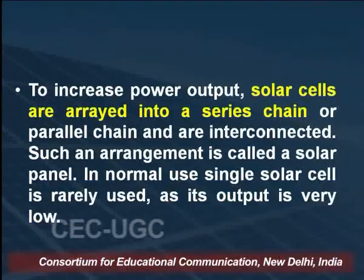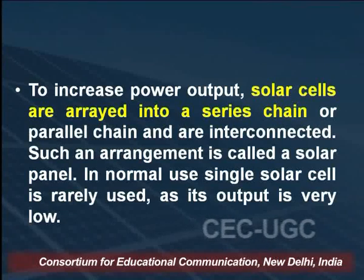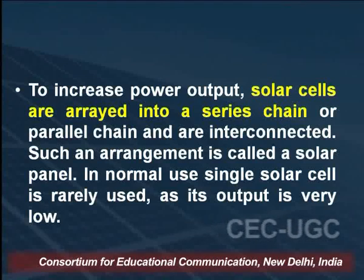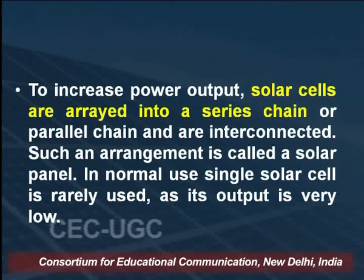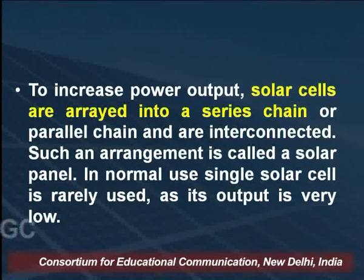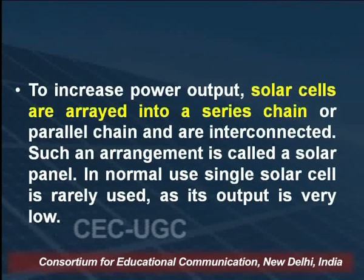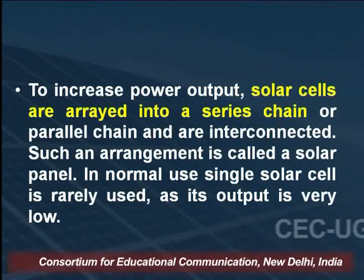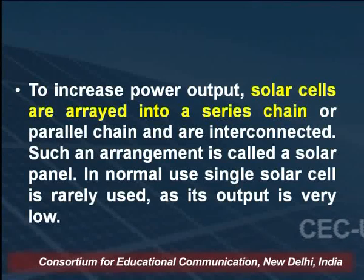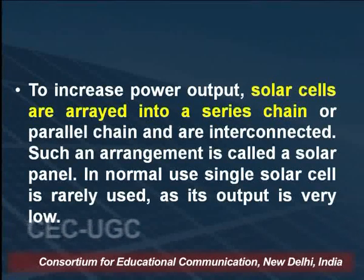To increase the power output of the solar cell, cells are arrayed in series or parallel chains that are interconnected. All the P-N junctions are interconnected in parallel chains — such an arrangement is called a solar panel. A single solar cell is rarely used in normal applications as its output is very low; using an array of solar cells increases the output power. On a single silicon wafer, a large number of P-N junctions are arranged in arrays and interconnected.